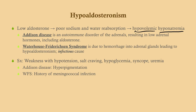Two causes that come up frequently on exams: Addison's disease — an autoimmune disorder attacking the adrenals resulting in low adrenal hormones including aldosterone — and Waterhouse-Friderichsen syndrome, a consequence of meningococcal infection causing hemorrhage into both adrenal glands, also leading to hypoaldosteronism. Symptoms include hypotension, salt craving, hypoglycemia due to low cortisol, and syncope due to low blood pressure.